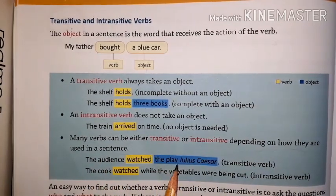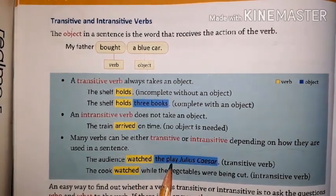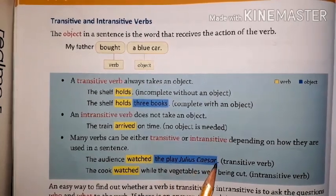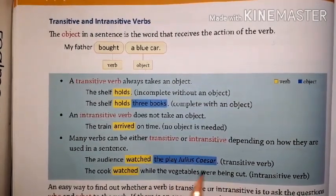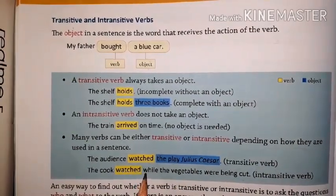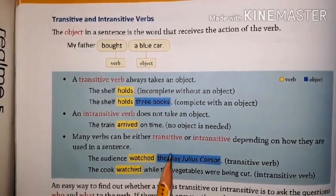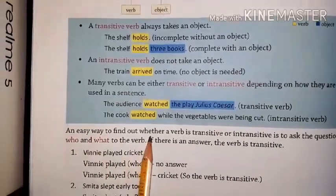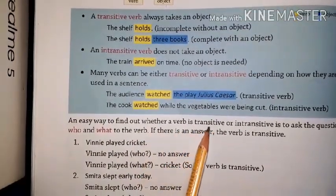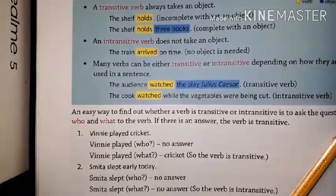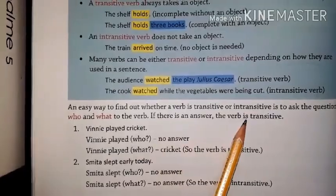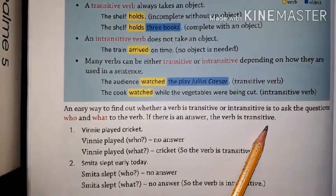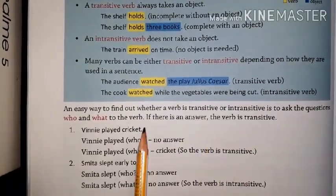For example: 'The audience watched the play Julius Caesar.' After 'watch' there is an object — 'the play Julius Caesar' — so it is a transitive verb. But in another sentence, after 'watch' there is no object, so it is an intransitive verb. An easy way to find out whether a verb is transitive or intransitive is to ask the question 'who' or 'what' after the verb.